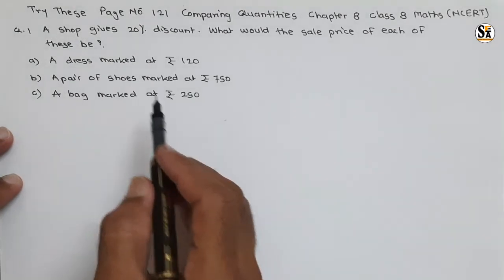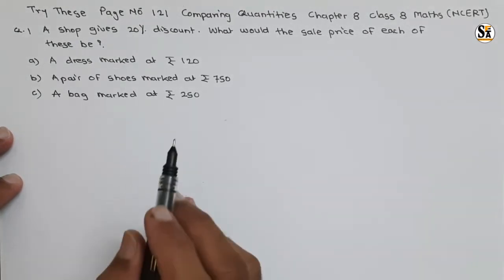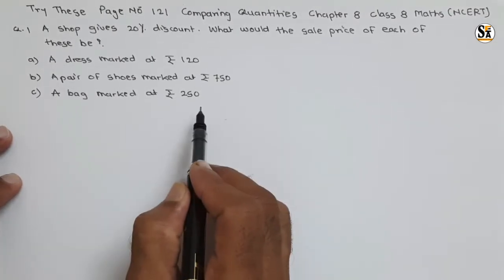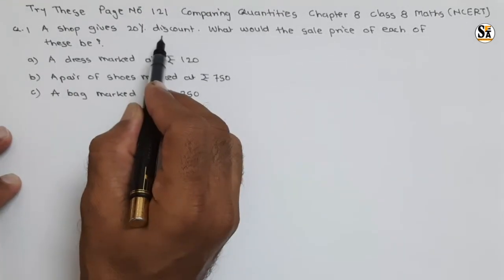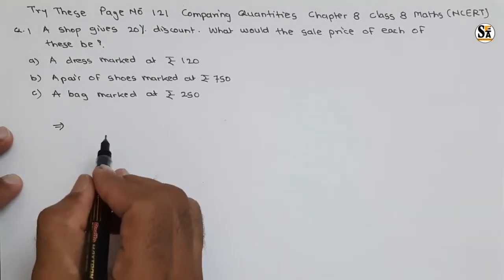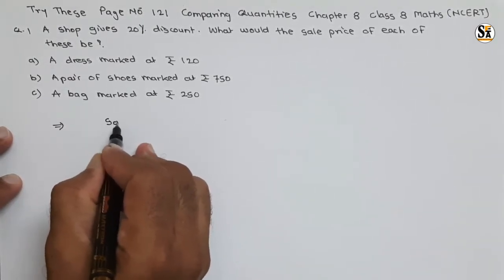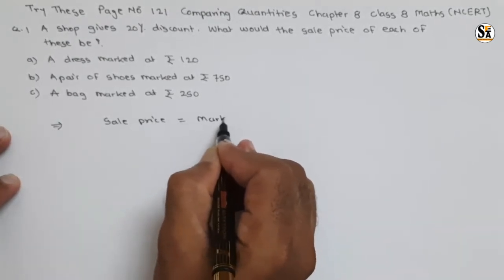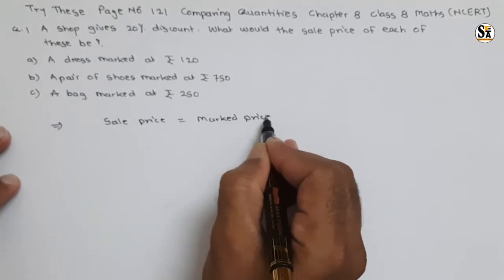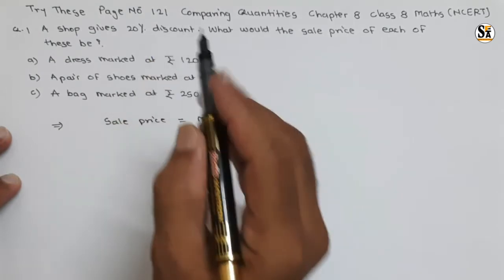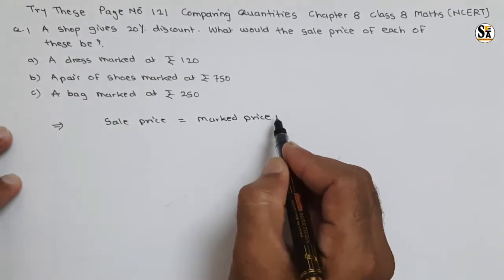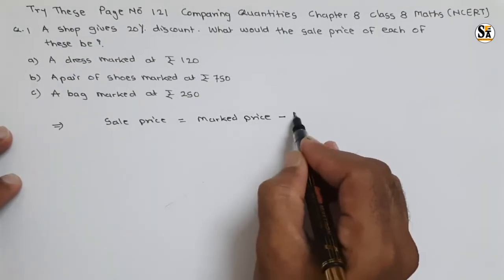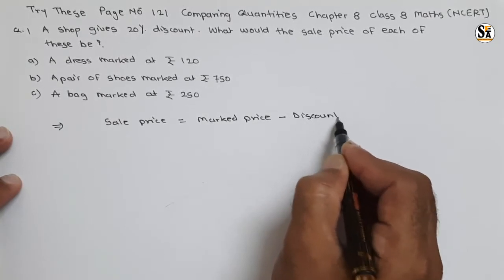For all three examples, mark price is given. We know sale price and mark price are different, and there is a discount. Sale price equals mark price minus discount. Since discount is on mark price, if we subtract the discount from the mark price we get the sale price.